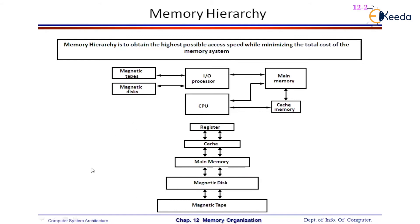Now let us have a look at the memory hierarchy. We discussed main memory — the only memory available to the CPU — and secondary memory, where programs not currently being executed by the CPU are dumped. Programs being executed concurrently get transferred to main memory. There is also something called cache memory. Why do we use this cache memory?